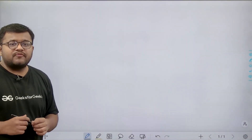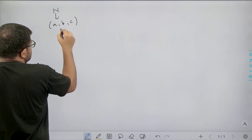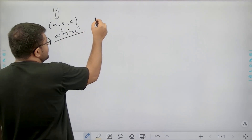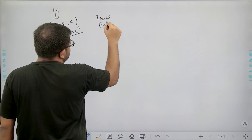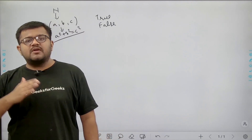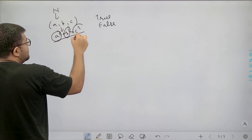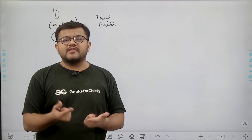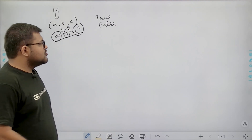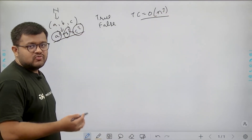Now, if you think about solving this problem: there are n elements and we need to find a triplet a, b, c such that a² + b² = c². The brute force approach is to use three loops with indices i, j, and k. We traverse all possible triplets and for each check whether a² + b² = c². If even one triplet is found, return true. However, the time complexity of this approach is O(n³), which is too slow.